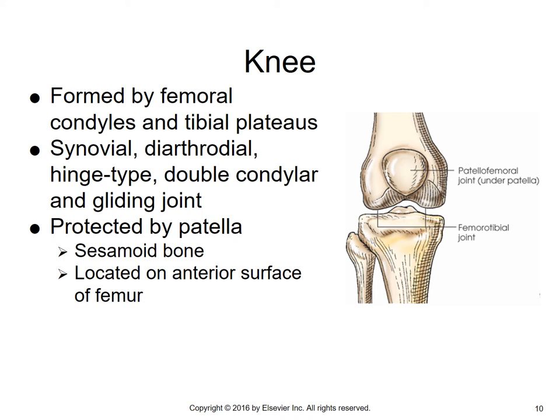Moving on to the knee: the knee is the articulation between the femur and the tibia — notice, not the fibula. The fibula is not in contact with the femur. The knee is formed by the femoral condyles articulating with the tibial plateaus. Your knee joint is a synovial diarthrodial hinge double condylar gliding joint. It is protected by the patella, which is your largest sesamoid bone, located on the anterior surface of the femur. Synovial joints have a capsule with synovial fluid, which aids in lubrication.